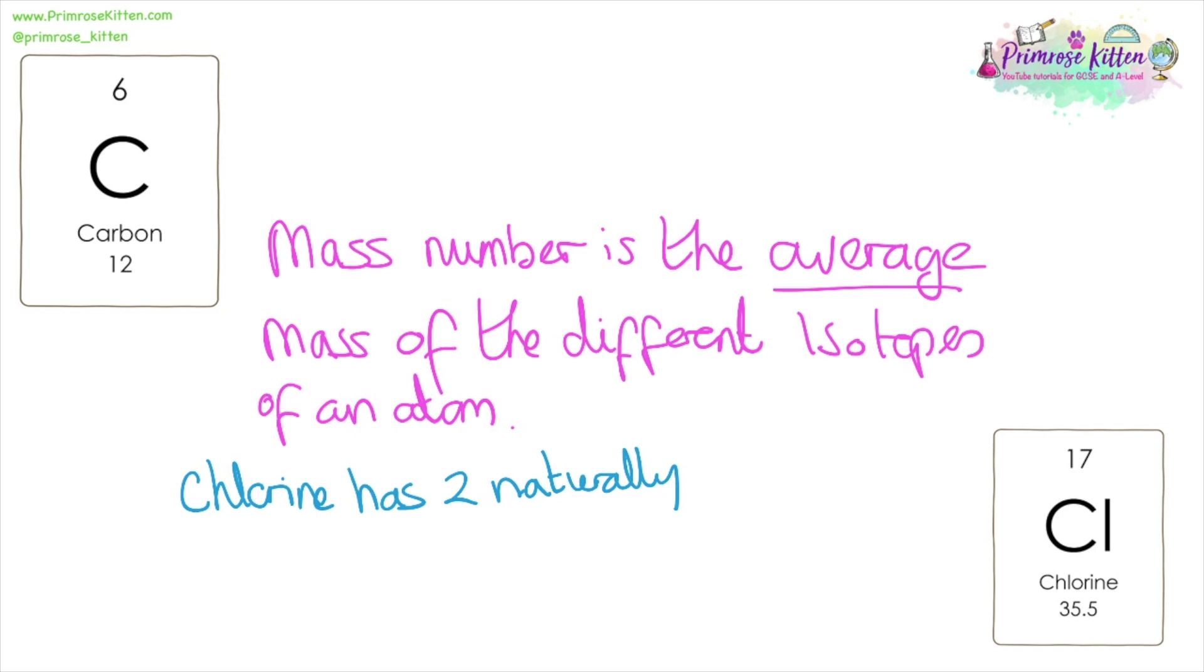Chlorine has two naturally occurring isotopes: chlorine-35 and chlorine-37. And the mass that we see on the periodic table, 35.5, is an average of the percentage of these two isotopes.